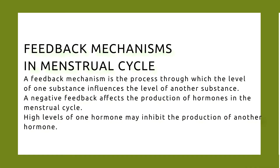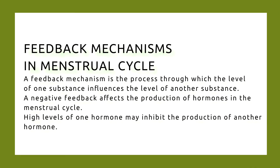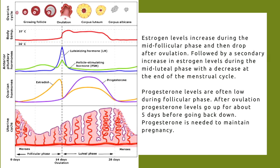Now we discuss feedback mechanisms in the menstrual cycle. A feedback mechanism is the process through which the level of one substance influences the level of another substance. A negative feedback affects the production of hormones in the menstrual cycle — high levels of one hormone may inhibit the production of another. As seen in the graph, estrogen levels increase during the mid-follicular phase then drop after ovulation, followed by a secondary increase during the mid-luteal phase with a decrease at the end of the cycle.